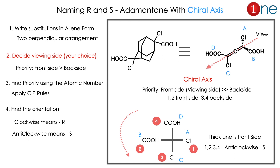Now we will see adamantane with a chiral axis — how we name R and S. It is a little tricky, so pay attention. First, write the substituents in the allene form with one plane perpendicular and one plane on the horizontal — in a perpendicular arrangement. Then follow the same CIP rules. First decide the viewing side — it is your choice. I chose the three-dimensional view, with chlorine below and COOH above, which is the AB side. The front side gets priority over the back side. The front side is normally written with a bold line. Given the priority ABCD, find the rest with CIP rules. The vertical line is the viewing line and the horizontal line is the back side. The thicker line (AB) is the front side, and the vertical line (CD) is the back side. Writing the priorities 1, 2, 3, 4 in anti-clockwise direction gives the configuration S. Clockwise means R; anti-clockwise means S. So you must master the 3D molecular structure and its understanding.